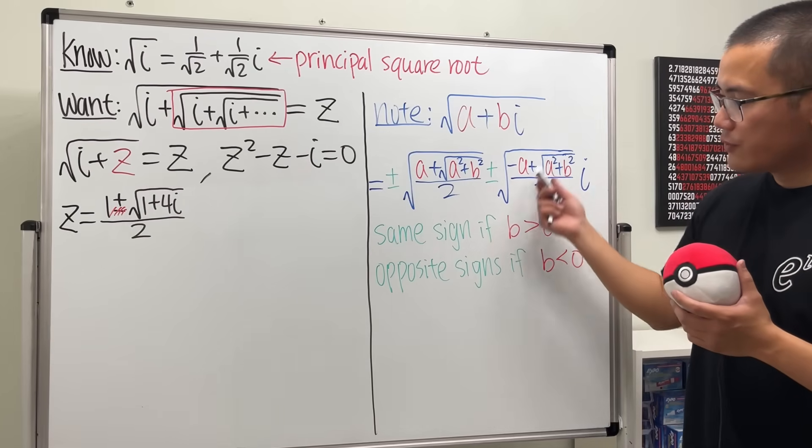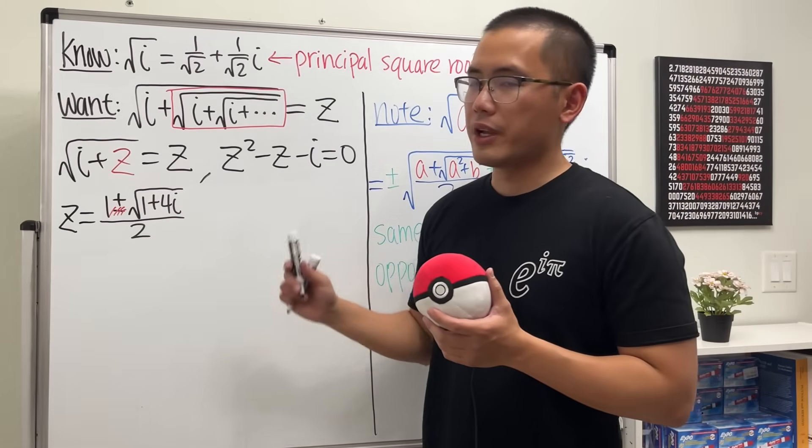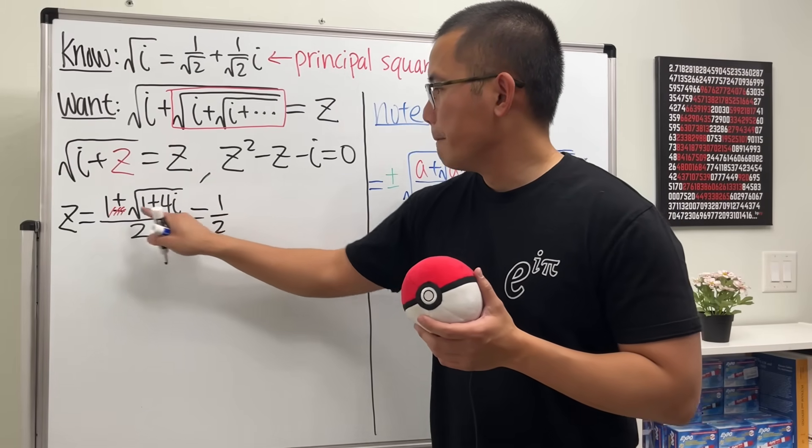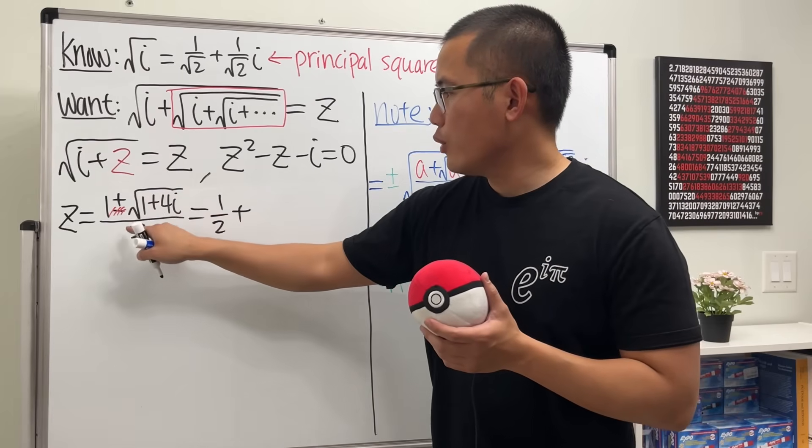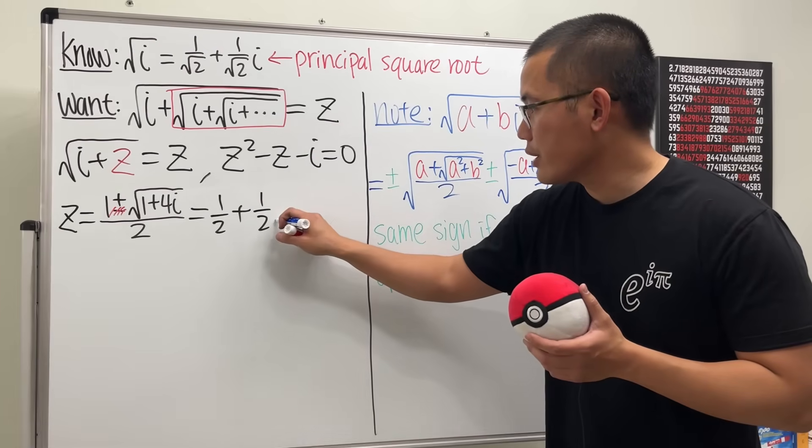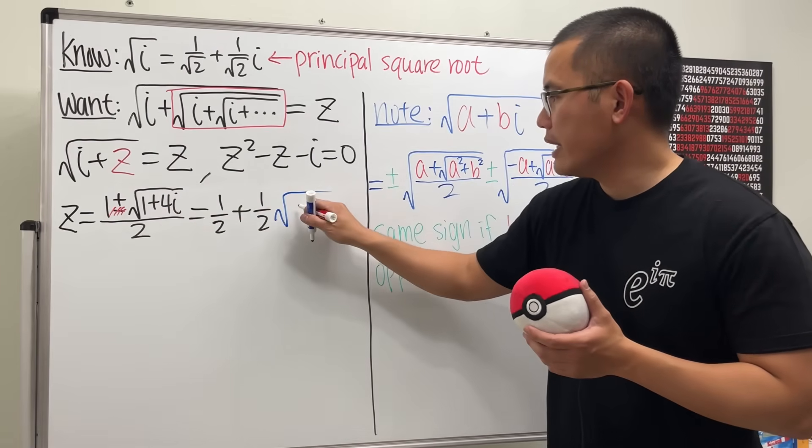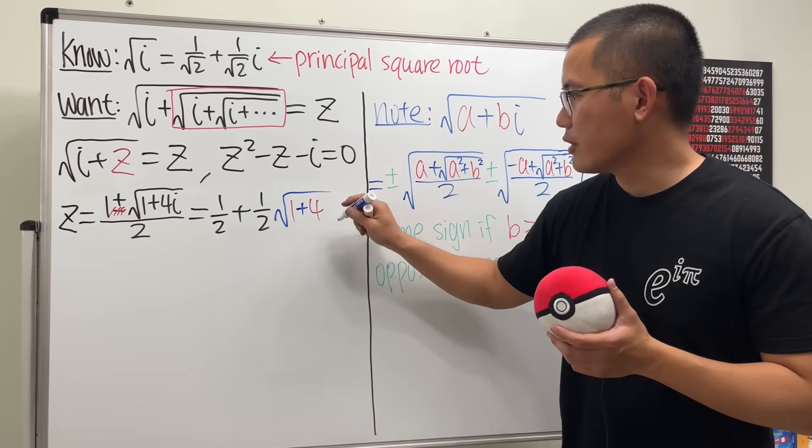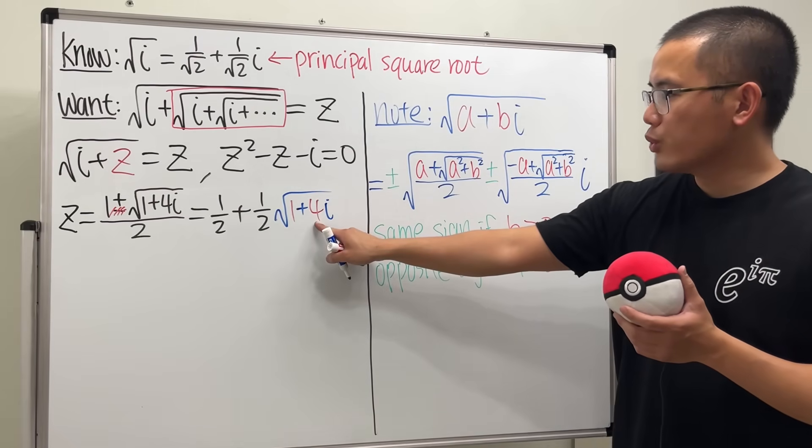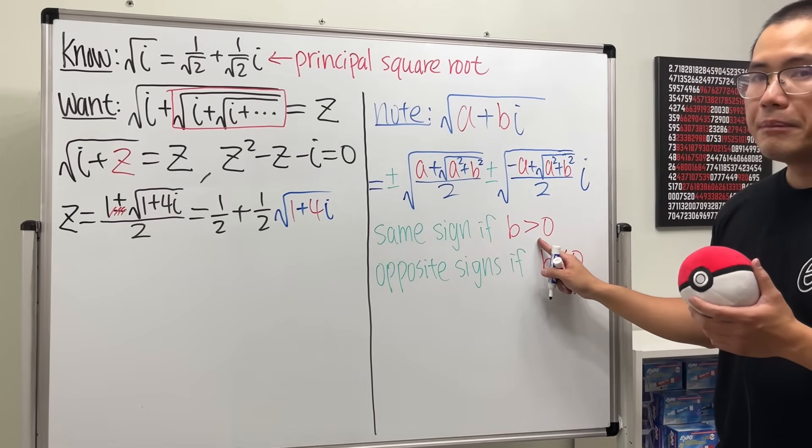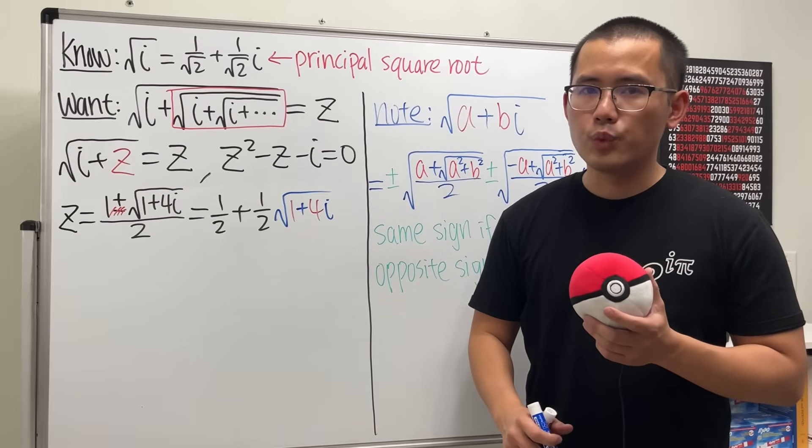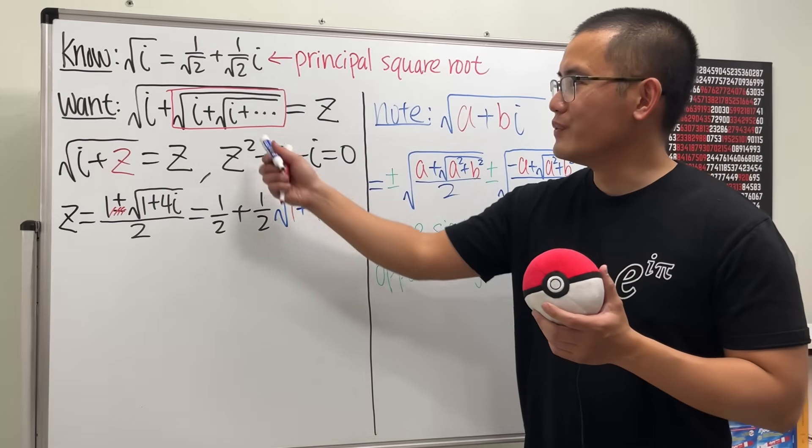So now we can just use this formula to figure out this part right here. And we see, this is the same as saying 1 over 2 plus, and we have 1 over 2 times that square root part. And we will just write this down right here. And I will put down the 1 and 4 in red, because they are the a and b values, respectively. And we see that b is equal to 4, which is positive. That means this and that have the same sign. And we will just take the positive sign, because we want to get the principal square root for this right here.